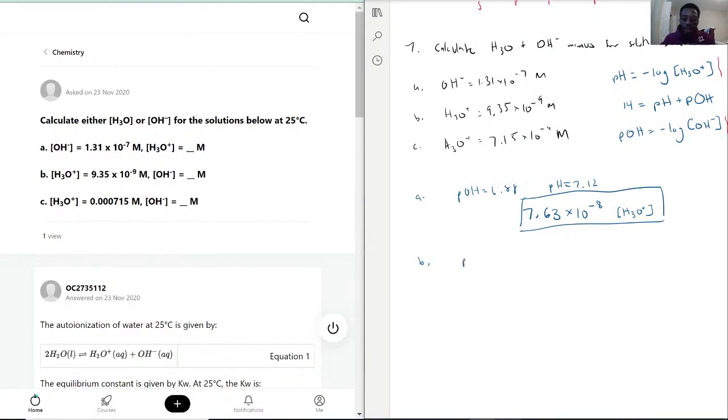First we find the pH using negative log of 9.35 times 10 to the negative 9, and we get pH of 8.029.